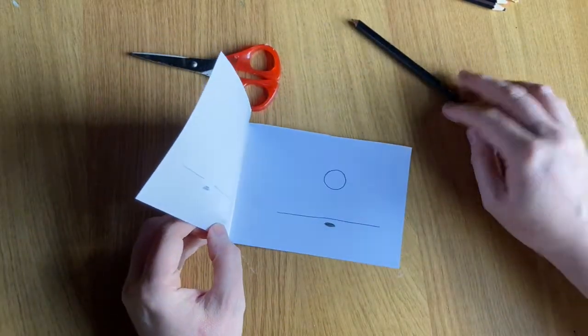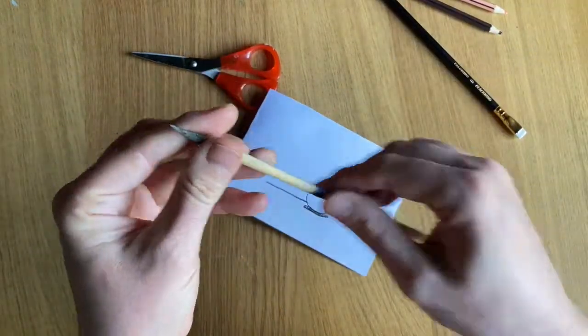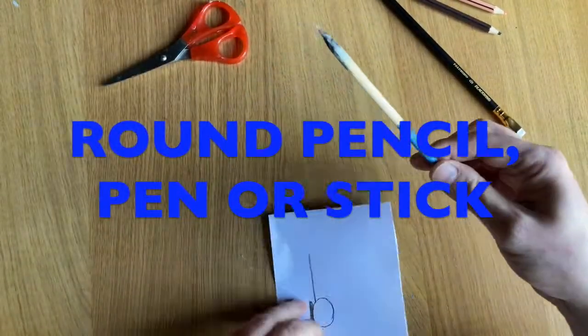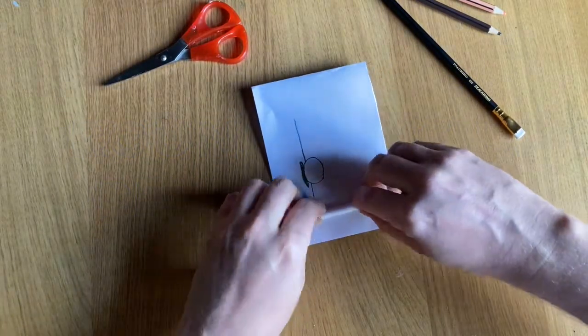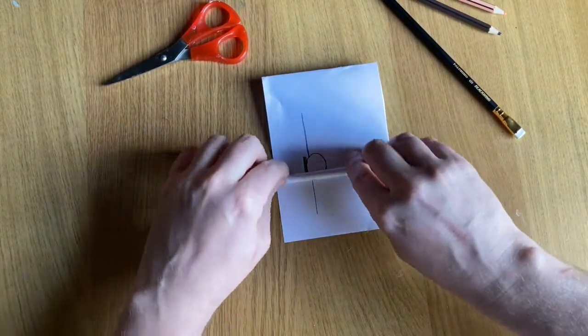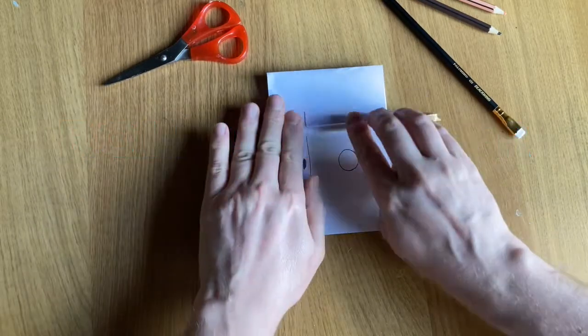Now I want something round so I can roll my top page around it, like a pen or a pencil. I've got this stick. I wouldn't use a pencil that's got angular edges on it. It just ends up ruining your top page.